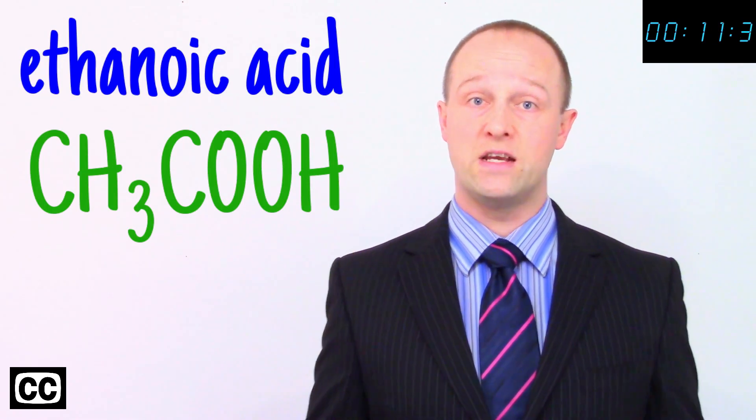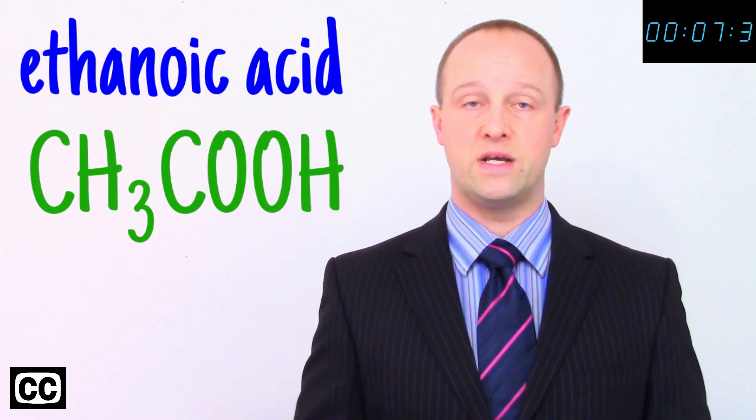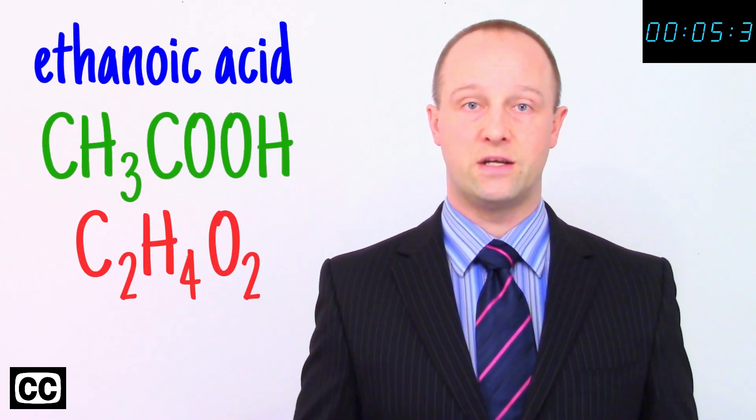All carboxylic acids have a COOH group, for example, so we would write ethanoic acid as CH3COOH instead of C2H4O2.